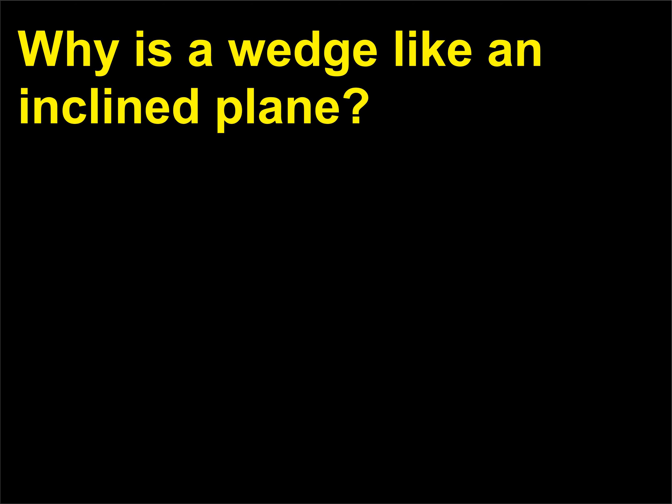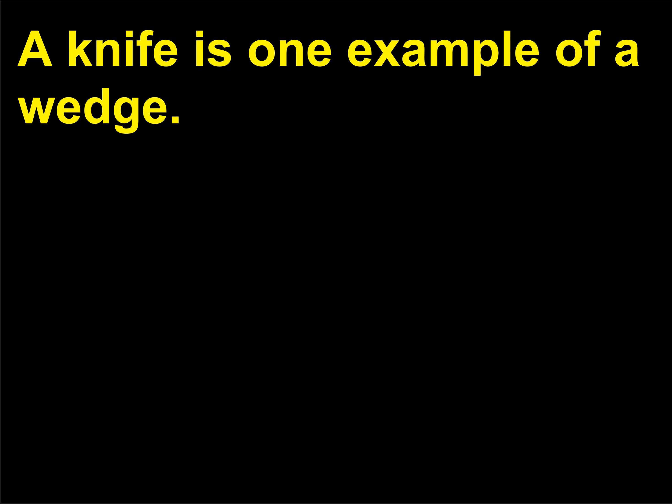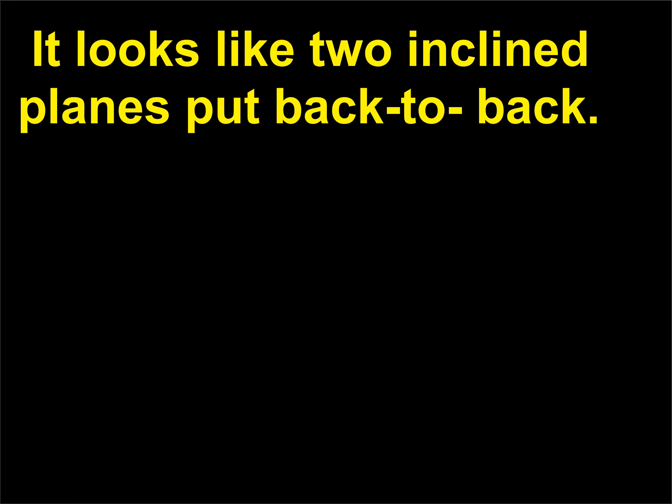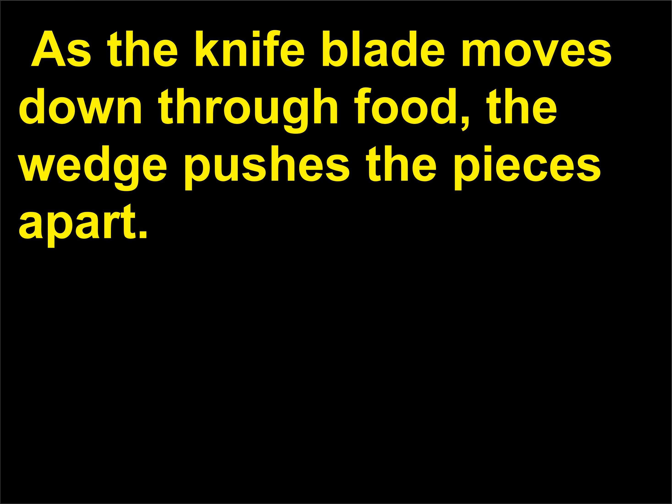Why is a wedge like an inclined plane? A knife is one example of a wedge. Look carefully at the sharp edge of a kitchen knife — it looks like two inclined planes put back to back. As the knife blade moves down through food, the wedge pushes the pieces apart.